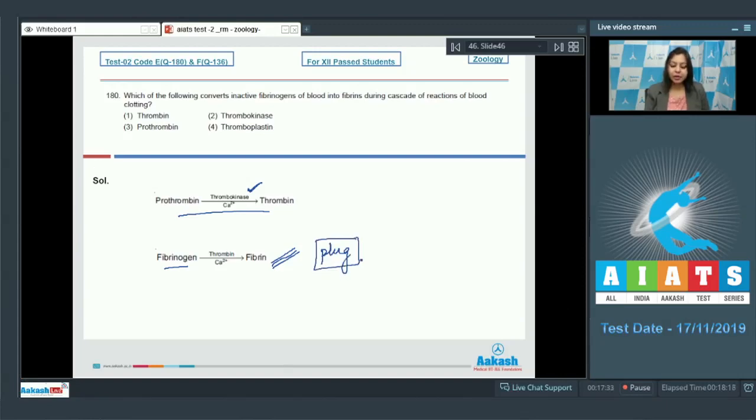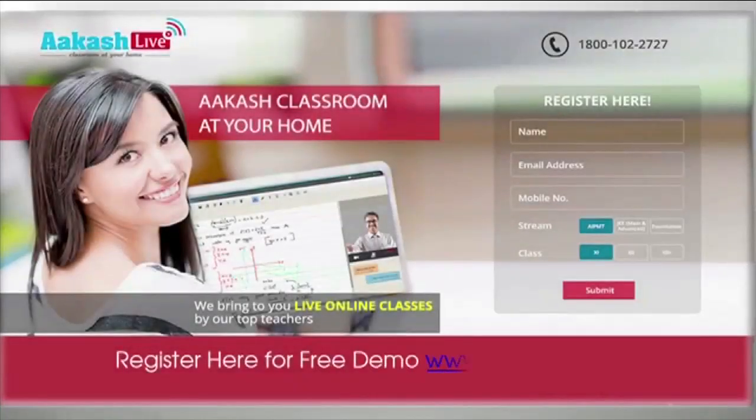So the correct answer for the conversion of inactive fibrinogens into fibrins is thrombin, option number one. So students, we have seen the quick solutions of AIATS-2 for RM batch and I hope you did well in the exam. All the best for the next AIATS. Thank you.